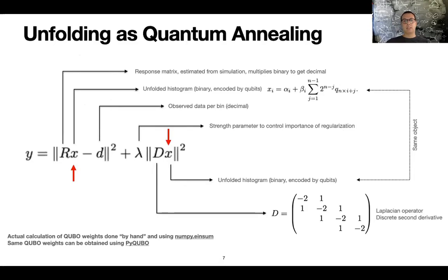So let's take a look at the anatomy of this function. So to begin with, you have this x vector that is substantially the binary expansion of the value of each bin. So this appears in two places. One is multiplied by the response matrix and the other is the one that accounts for the smoothness of the solution.